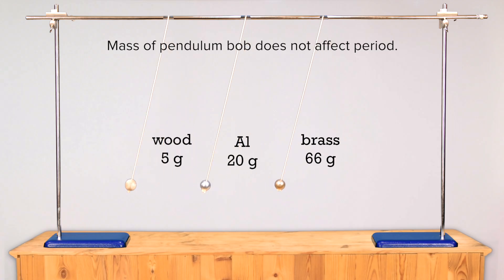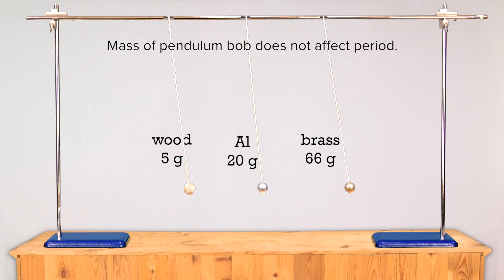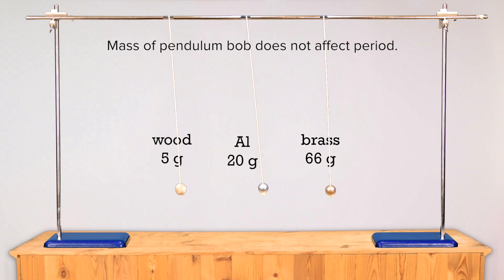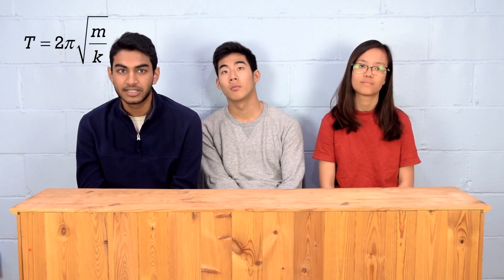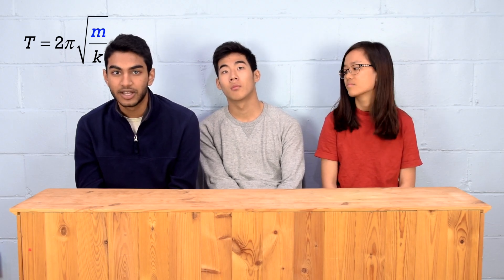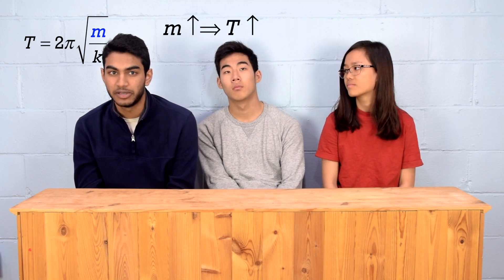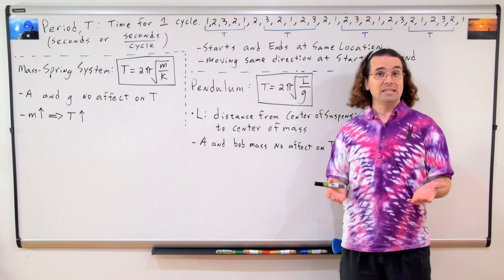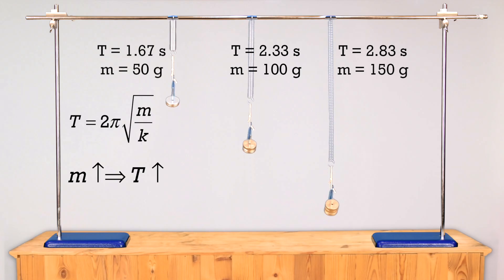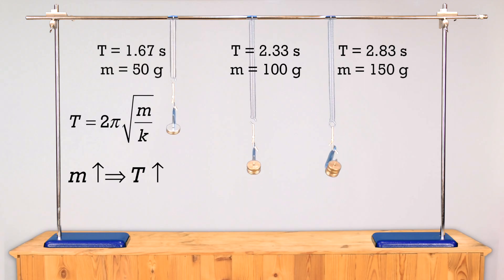Anish, what if we increase the mass in a mass-spring system? What happens to the period then? If we increase the mass in a mass-spring system, well, the mass is in the numerator, so an increase in mass will increase the period. Yes, as you can see, an increase in mass increases the time it takes for one full cycle.